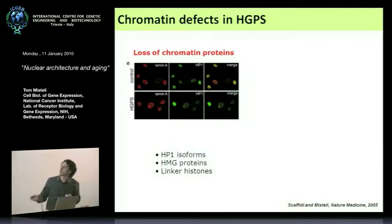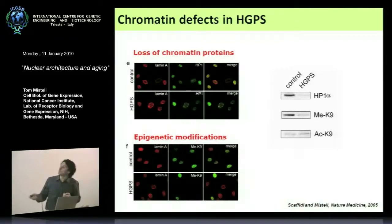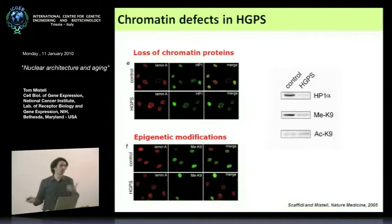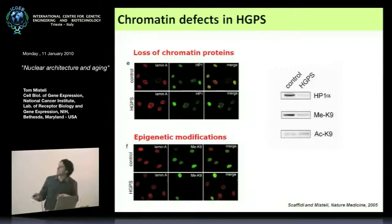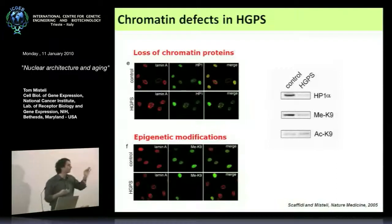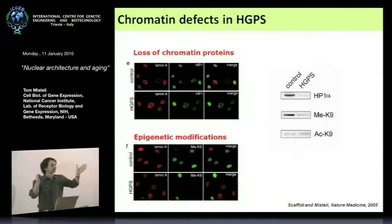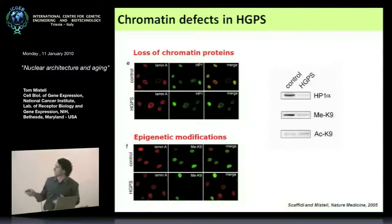We also see dramatic epigenetic changes — most drastically, loss of tri-methylation of lysine 9 on histone H3, which is a mark of heterochromatin. Others have reported changes including lysine 20, lysine 27, and various other modifications. What's quite striking is that we have a situation where a mutation in an architectural protein at the periphery of the nucleus affects the epigenetic status of your entire genome. We're obviously trying to figure out how that works.